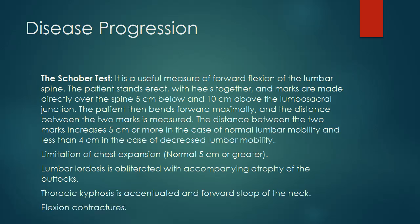Disease Progression: The Schober test is a useful measure of forward flexion of the lumbar spine. The patient stands erect with heels together, and marks are made directly over the spine 5 cm below and 10 cm above the lumbosacral junction. The patient then bends forward maximally and the distance between the two marks is measured. The distance increases 5 cm or more in normal lumbar mobility, and less than 4 cm in decreased lumbar mobility. There is also limitation of chest expansion; normal chest expansion is 5 cm or greater.